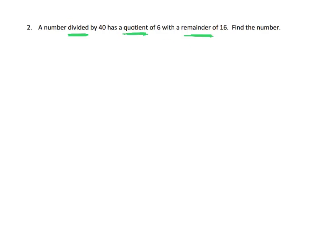So we're going to start with our division. We're going to go back and read it. It says a number divided by 40. So when it says divided by 40, is the 40 going to go inside or outside? It's going to go outside. It has a quotient of 6. So does the 6 go down here or up there? It goes up here with a remainder of 16.